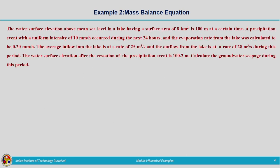The second example: the water surface elevation above mean sea level in a lake having a surface area of 8 kilometre square is 100 metres at a certain time. A precipitation event with a uniform intensity of 10 millimetres per hour occurred during the next 24 hours, and the evaporation rate was 0.2 millimetres per hour. The average inflow is 25 metre cube per second and outflow is 28 metre cube per second. The water surface elevation after the cessation of rainfall is 100.2 metres. Calculate the groundwater seepage during this period.